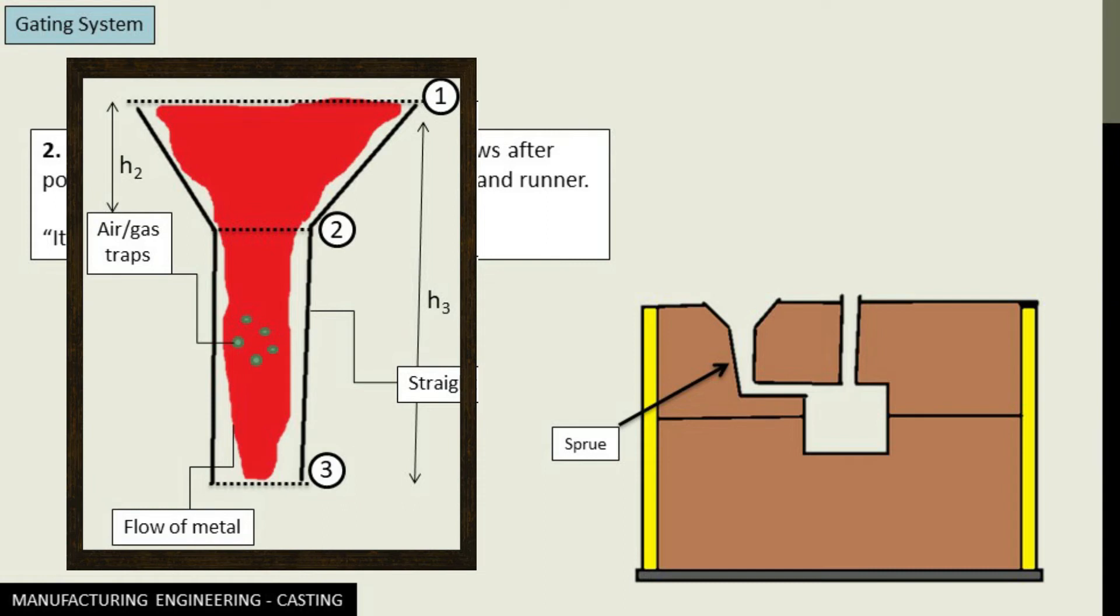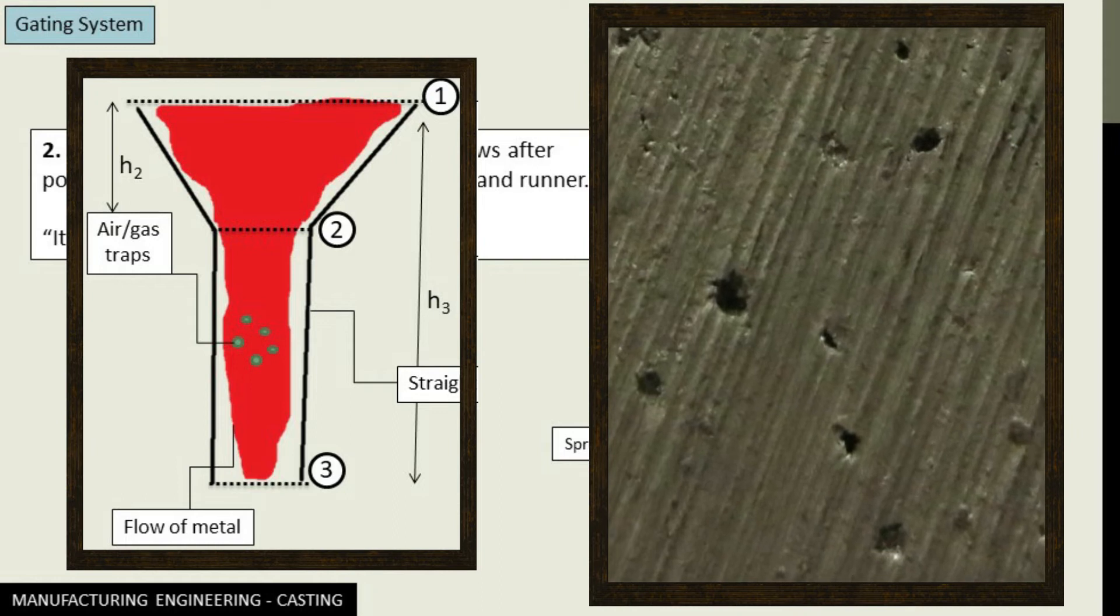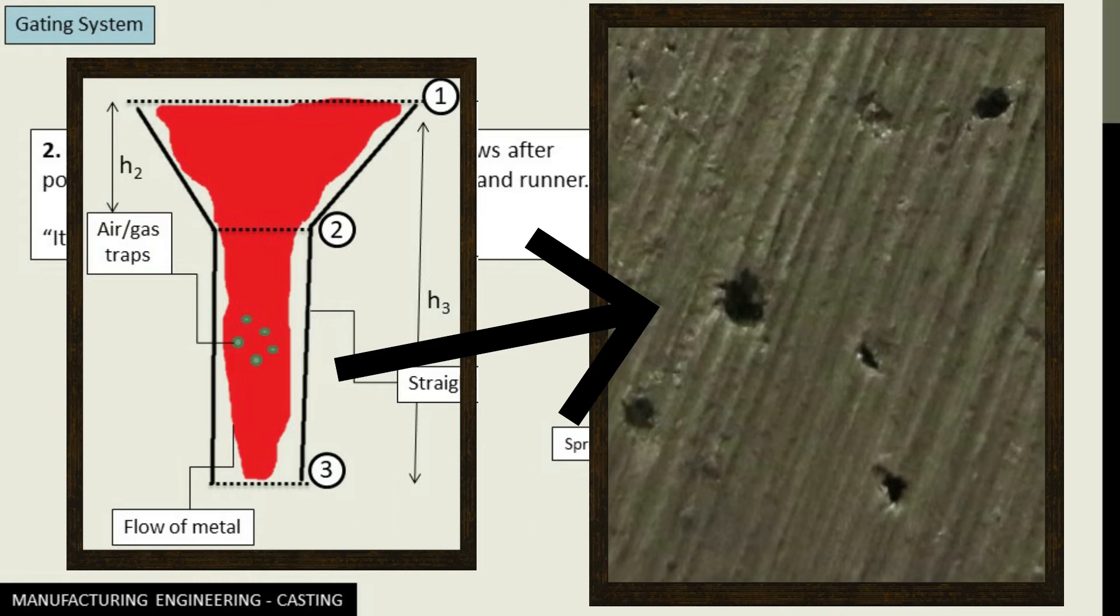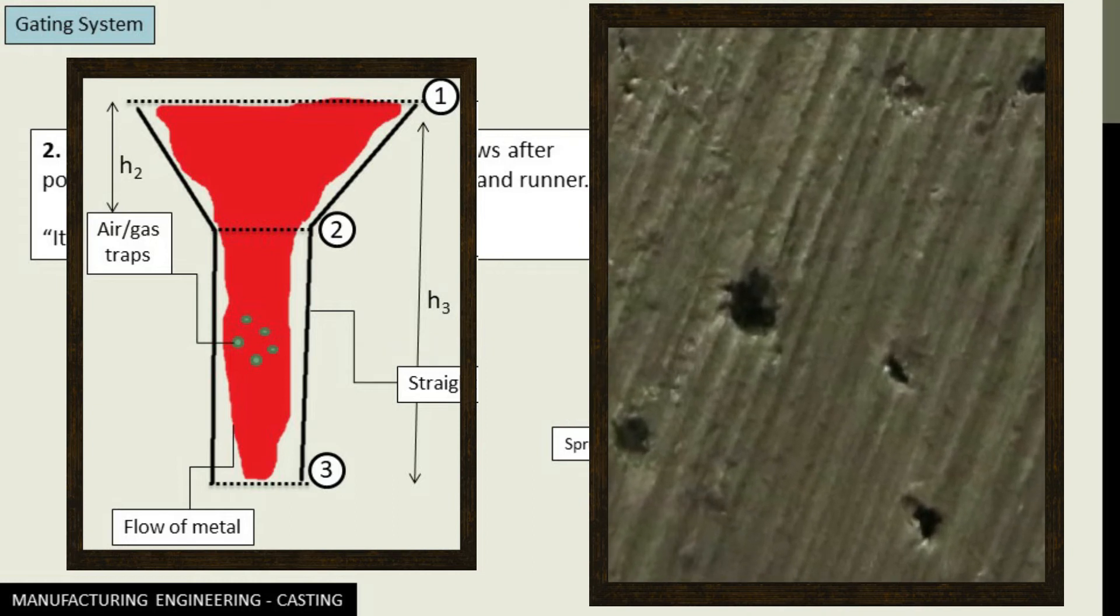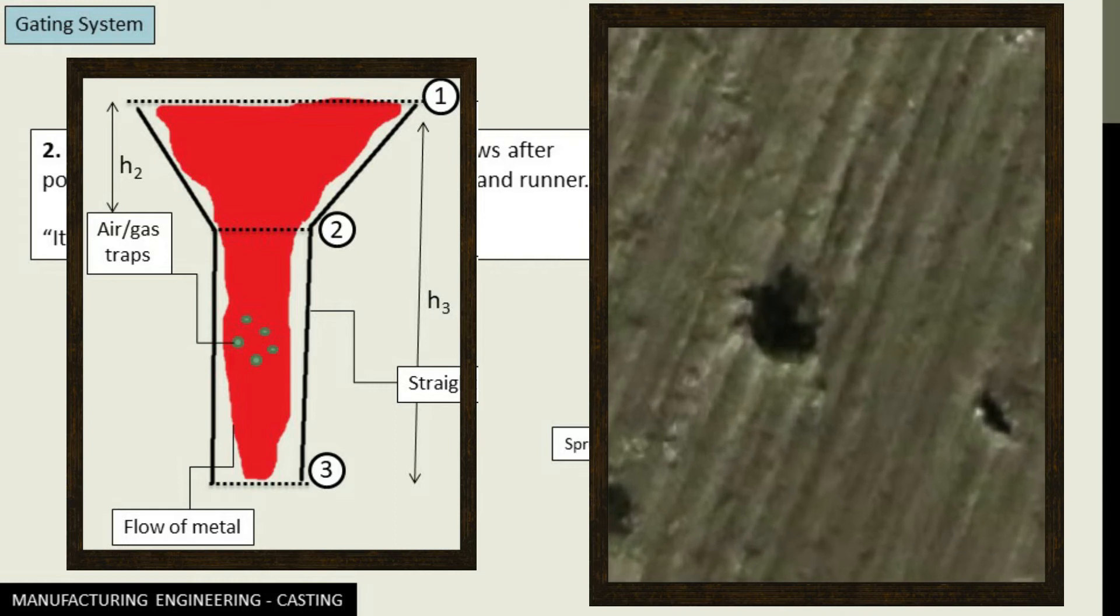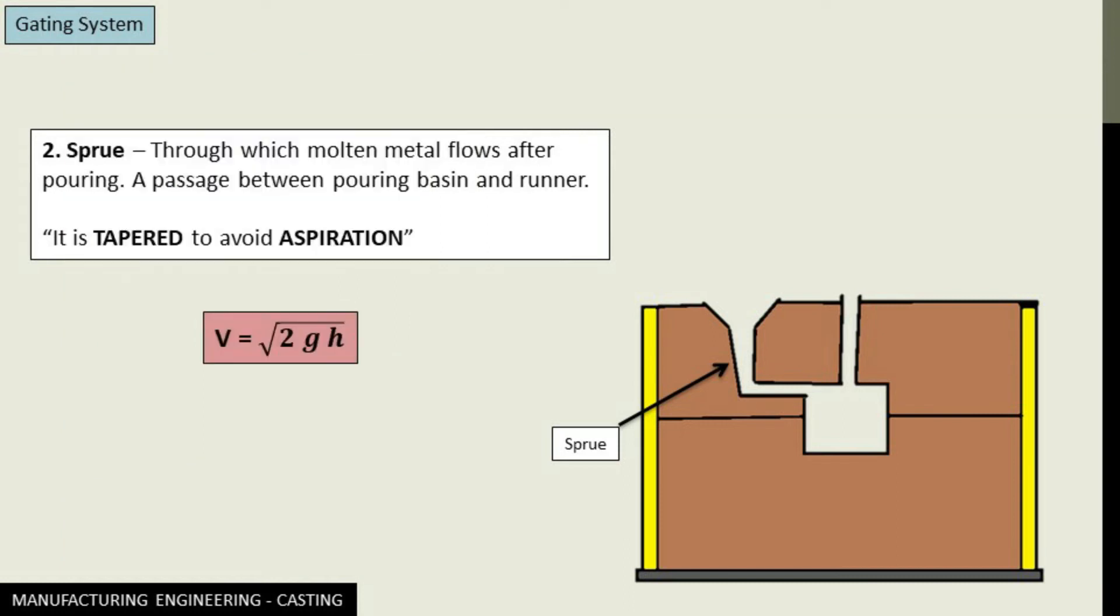And it will infiltrate the molten metal, and on solidification they will be left behind as casting defect. And hence to avoid the same, we provide taper to this sprue. We will have a detailed explanation of what this aspiration effect in the coming lectures.